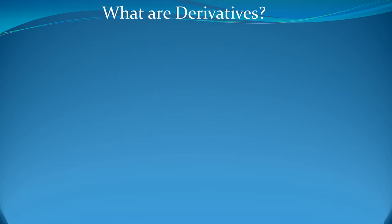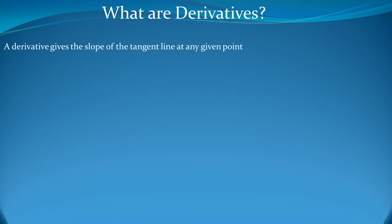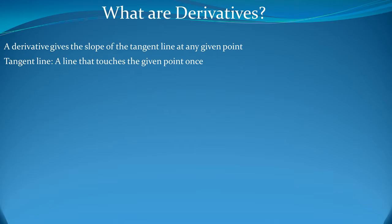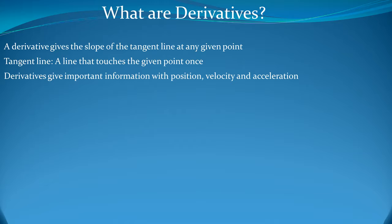So what are derivatives? A derivative gives the slope of the tangent line at any given point. The tangent line is a line that touches the given point once. Derivatives give important information about position, velocity, and acceleration.